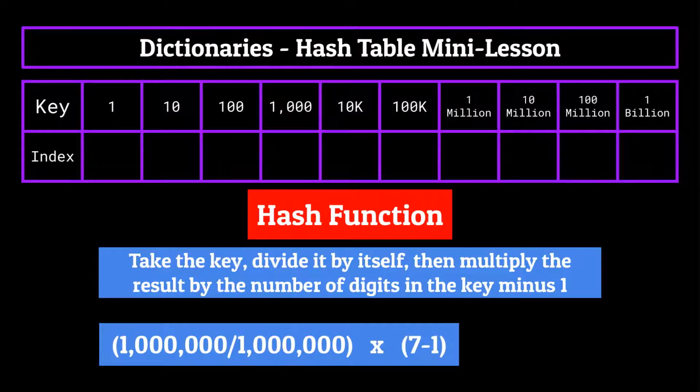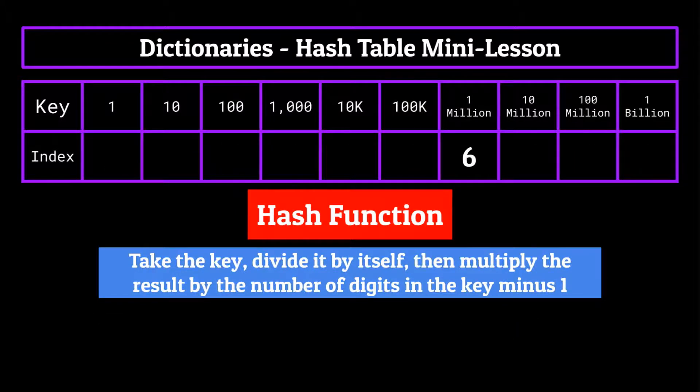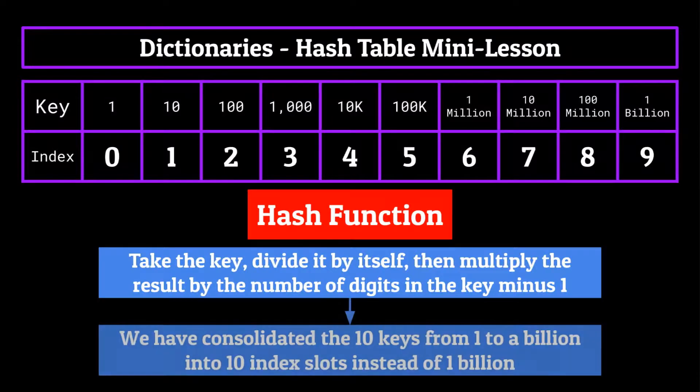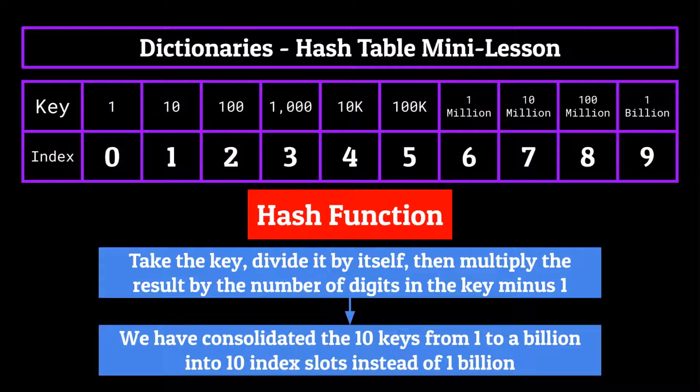That means we'd store the key 1 million at index location six. Now if we do this for every key in the dictionary, we can see that each key in the key value pair is stored at some index from zero to nine. We've consolidated the 10 keys from one to a billion into 10 index slots instead of a billion, a pretty good improvement in my opinion.